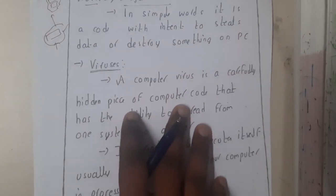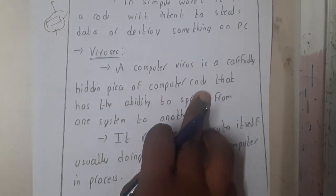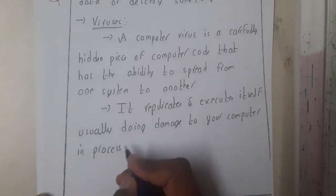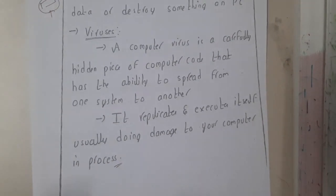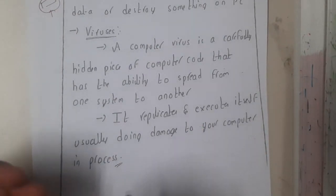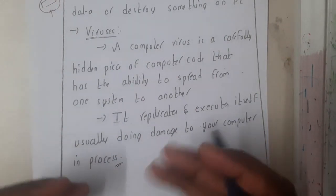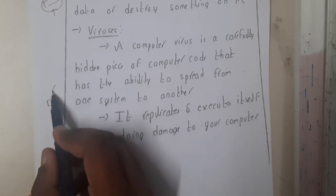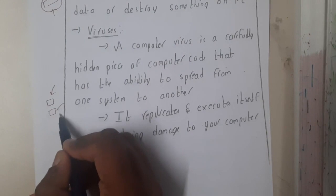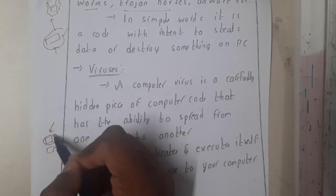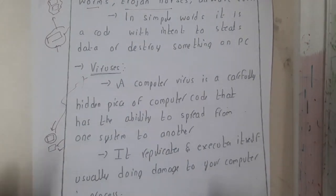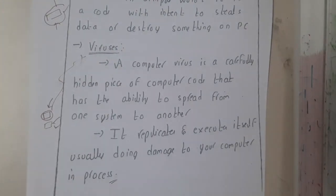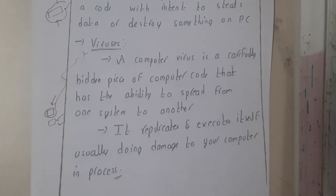A computer virus is a carefully hidden piece of code that has the ability to spread from one system to another. It replicates and executes itself, usually doing damage in the process. For example, in college labs some systems are really slow — if every hardware component is fine but the system is still slow, it is likely infected with a virus. The virus replicates itself, blocks processes, and uses up CPU so other processes cannot run.